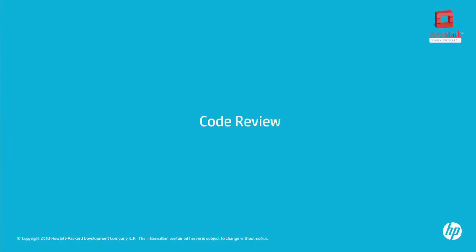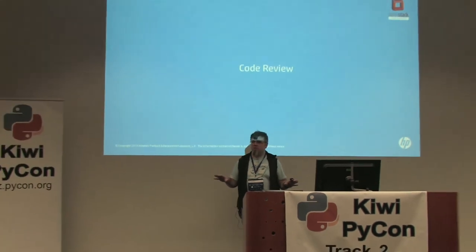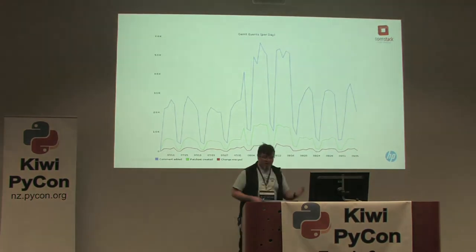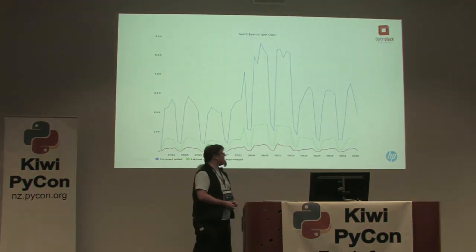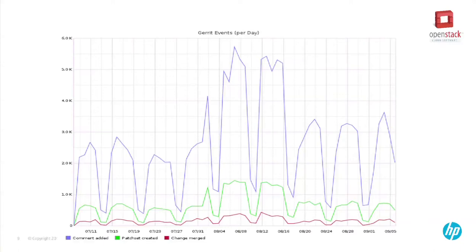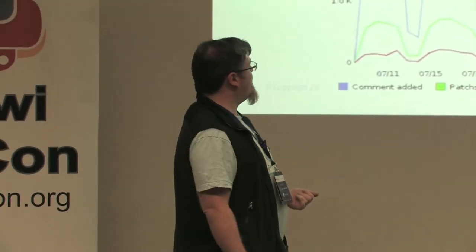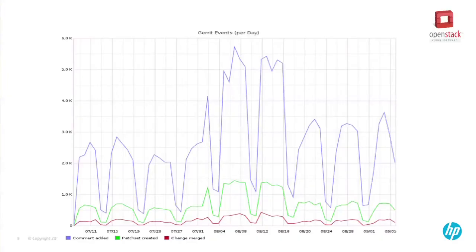How do you get code into trunk? You do code review. OpenStack uses Gerrit for its code review system. Gerrit is a Git-based code review system that lets a lot of people collaborate and have a discussion about a patch. These three blue lines on the graph are the number of comments per day — the scale on the left is in thousands being left in the OpenStack code review system about patches going through it.